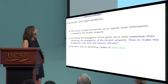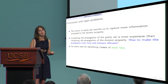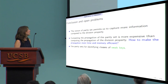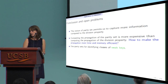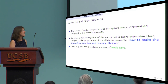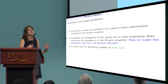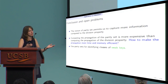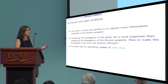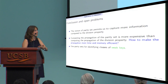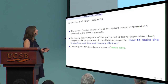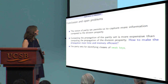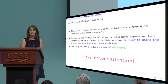To conclude: the notion of parity set captures more information during propagation compared to the division property alone. The drawback is that it takes more time and memory to propagate, since you have much more information compared to just the Hamming weight bound of the division property. An open question is how to make this more time- and memory-efficient. Thank you very much for your attention.